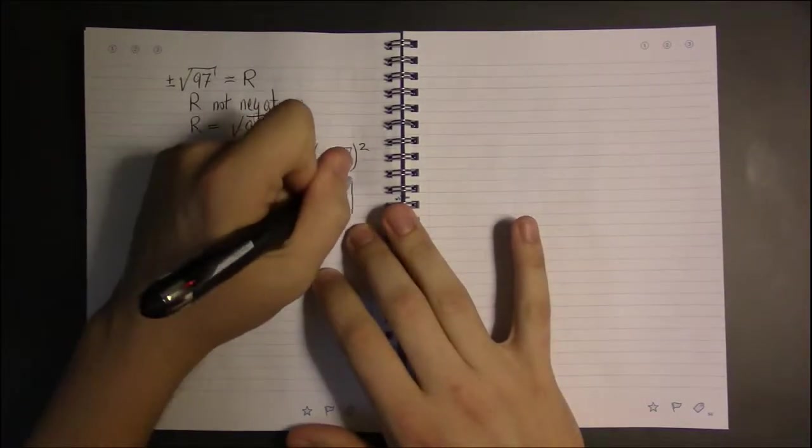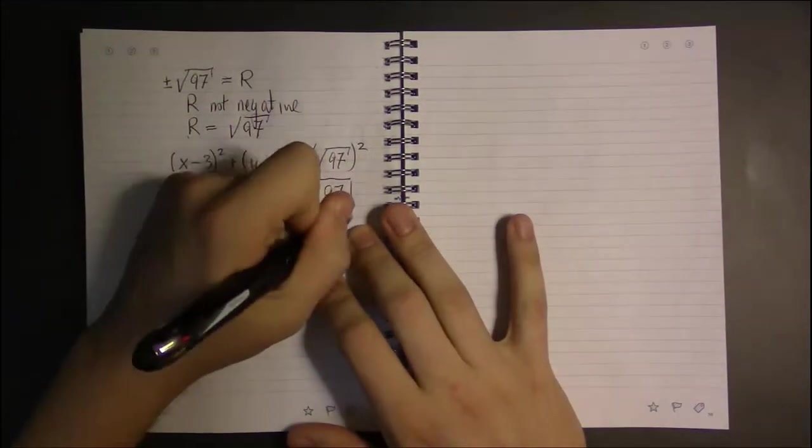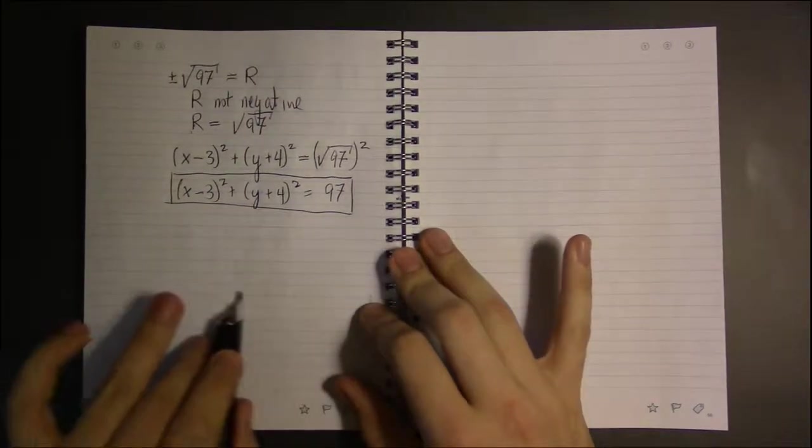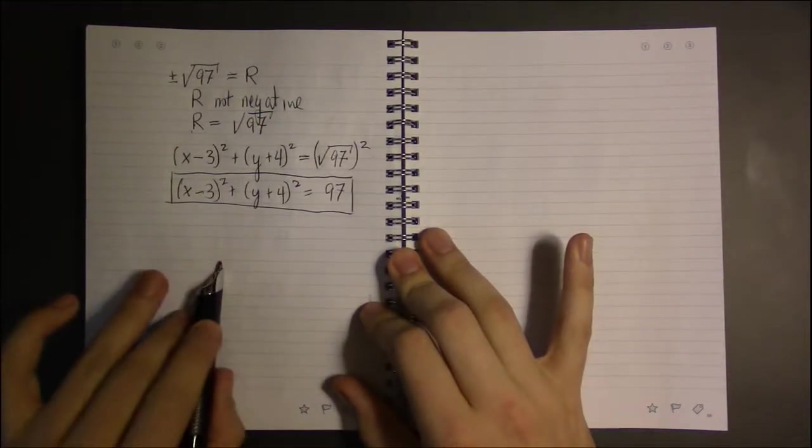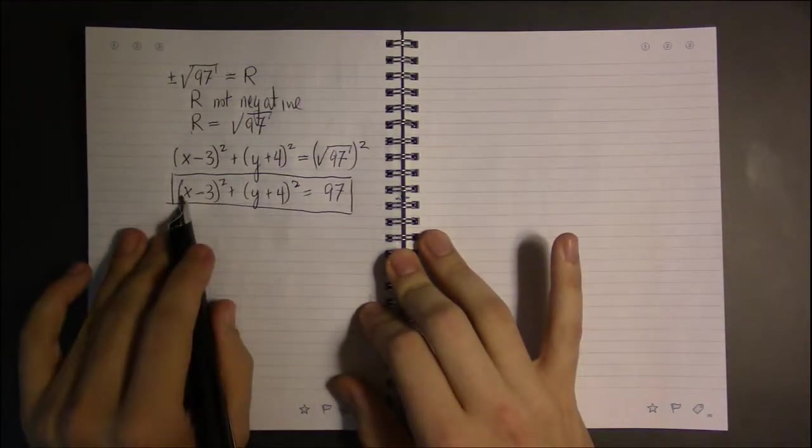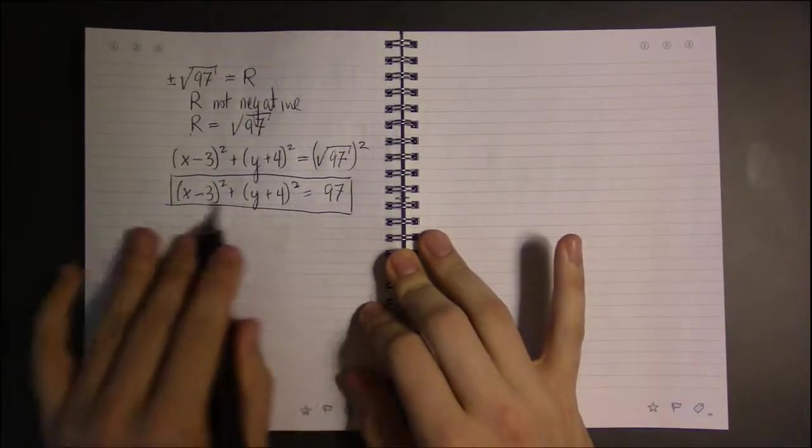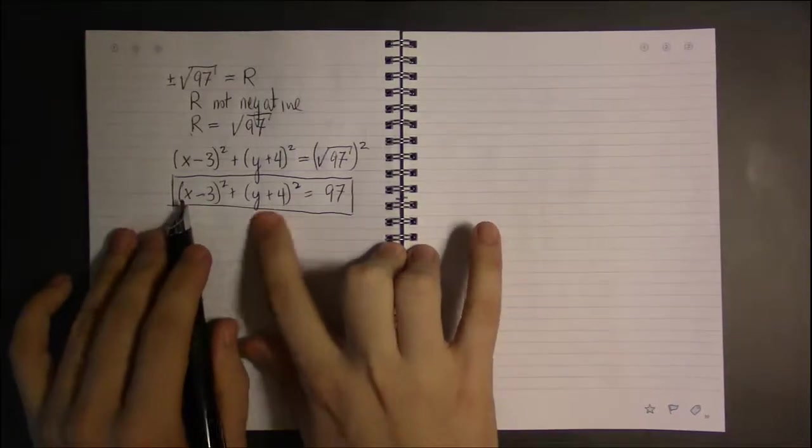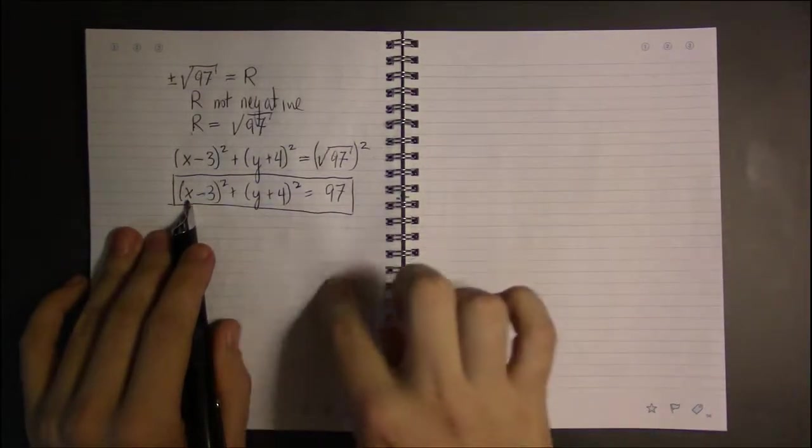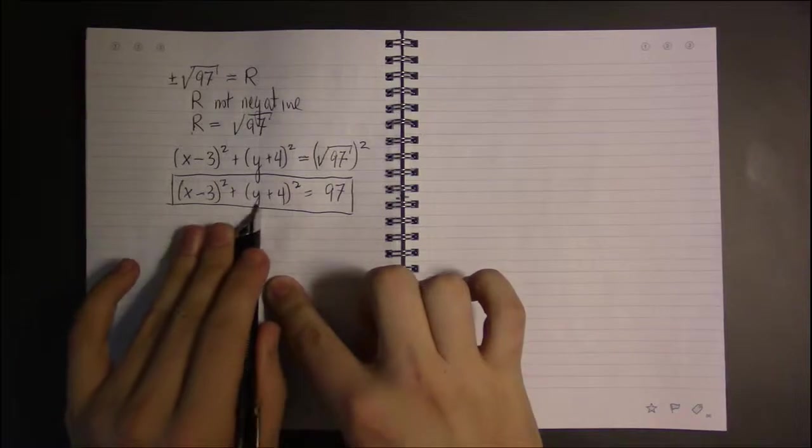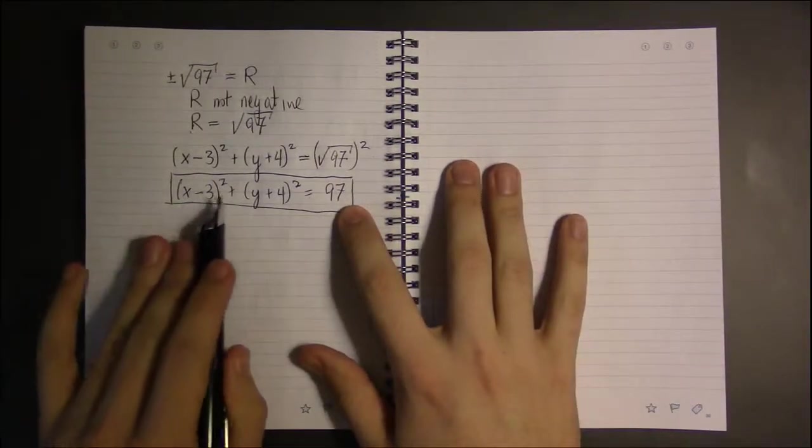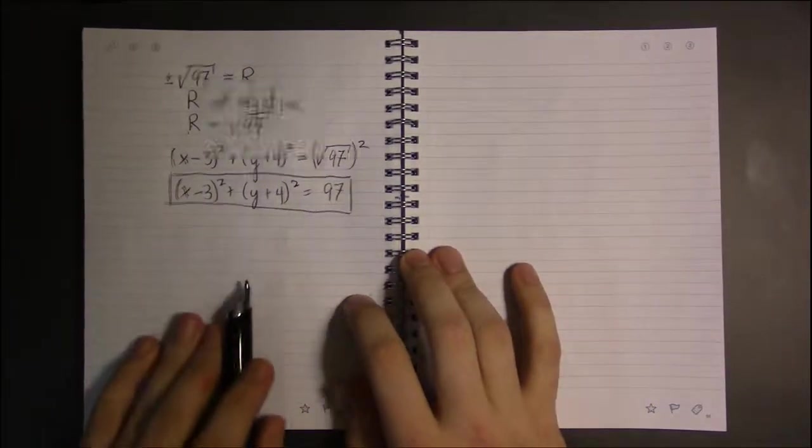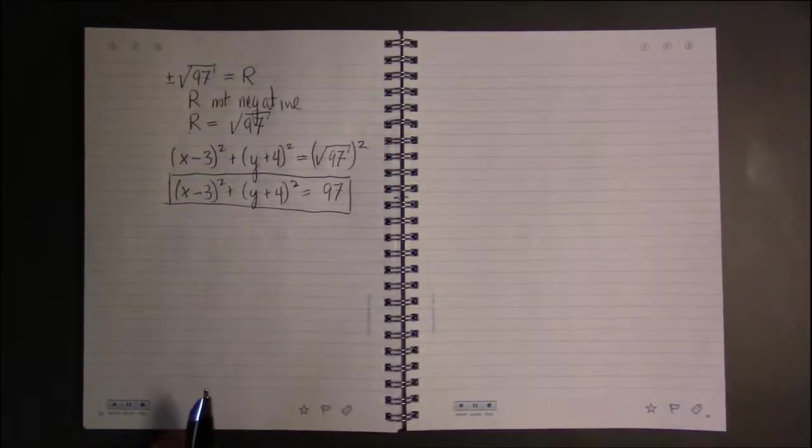So that is our answer. And again, since our answer should be infinitely many points that when you look at them together they form a circle, if I'm supposed to have infinitely many points, the easiest way to represent that is just with an equation such that every point on the circle, when you plug in its x-coordinate and y-coordinate, gives an equation where the left and right hand sides are equal.